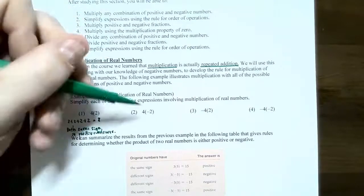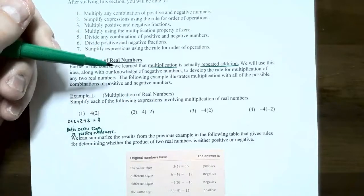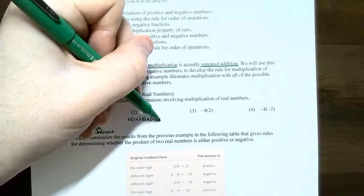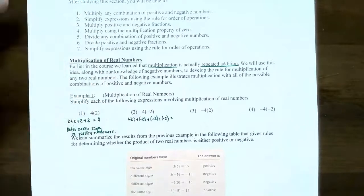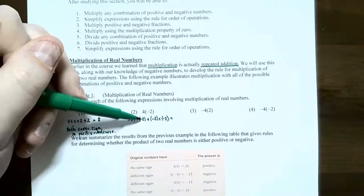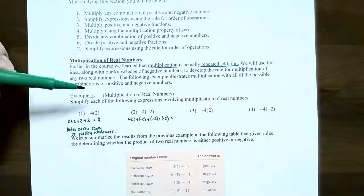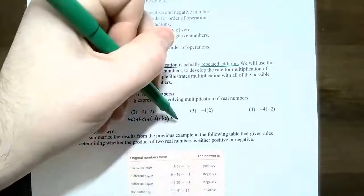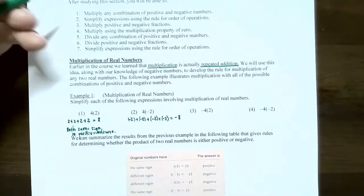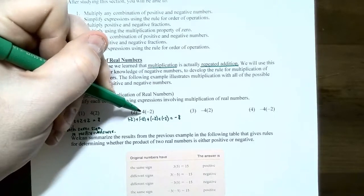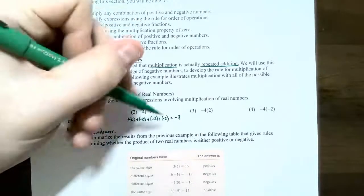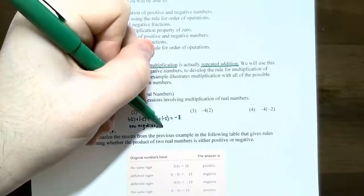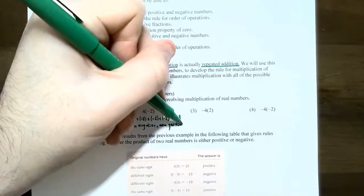Number 2: 4 times negative 2. This means you have negative 2 added with itself 4 times — negative 2 plus negative 2 plus negative 2 plus negative 2. They are the same sign, so you add the numbers and keep the sign. Negative 2 plus negative 2 is negative 4, plus negative 2 is negative 6, plus another negative 2 gives negative 8. The answer was negative because you had 1 positive and 1 negative. If you have 1 negative and 1 positive, the answer will be negative.